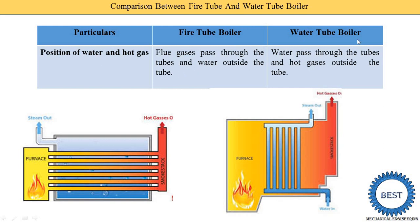Another is the water tube boiler. This is the figure — this is the complete shell, this is the furnace, and these are the various pipes. Water enters these pipes and the gases are outside the pipe. That is why it is known as the water tube boiler because water is inside the tube. Whatever particle is inside — if water is inside the tube it is known as water tube; if fire is inside the tube it is known as the fire tube boiler.